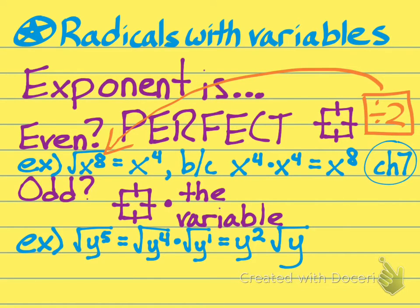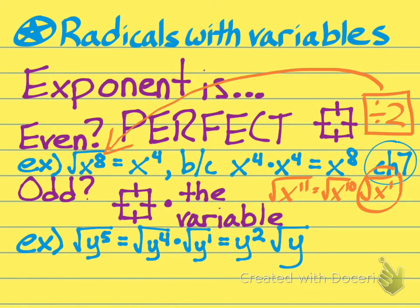One more instance of this. If you have x to the eleventh power and are square rooting it, rewrite it as the square root of x¹⁰ times the square root of x¹. You take a single copy of the x variable so that eleven — which is odd — becomes ten, which is even. You can now square root x¹⁰ to get x to the fifth power. The radical x¹ just comes down and becomes part of the final answer.